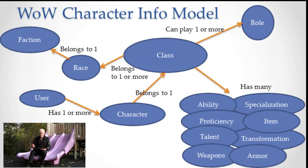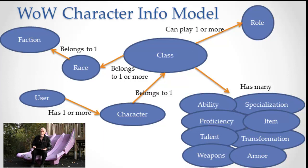Something to notice about this diagram is that I don't have a lot of the attributes listed here. This is really only the information types and how they're related to each other. So we have faction, race, class, role, user, and character information types, and then this whole glob of information types over on the side. I'll talk about those in just a second.